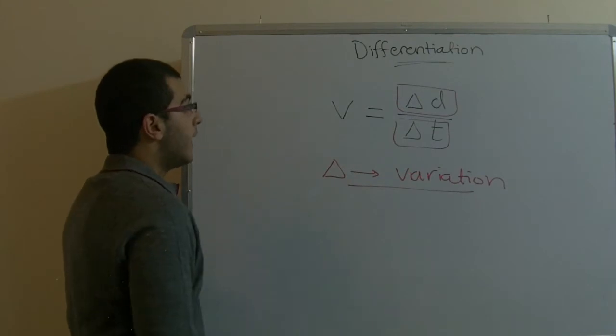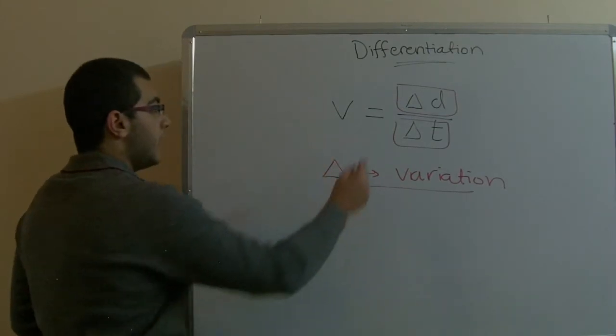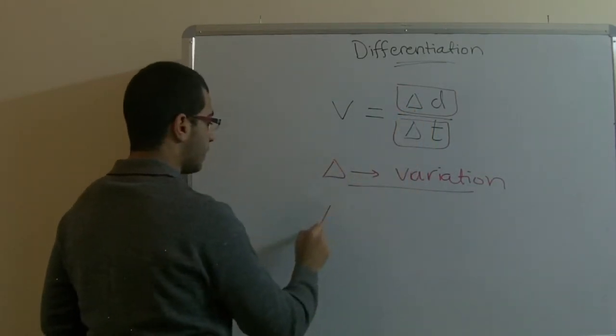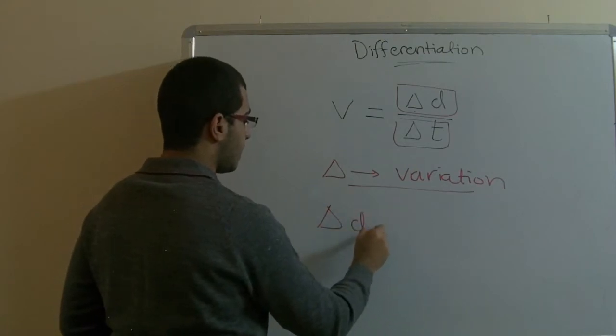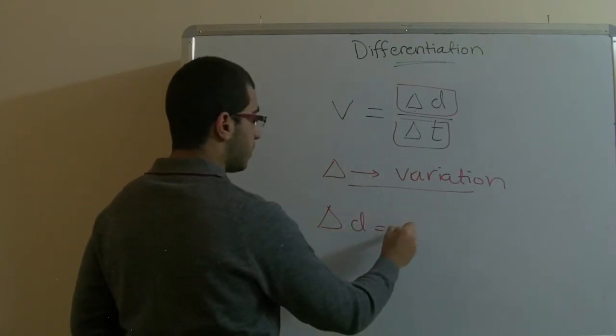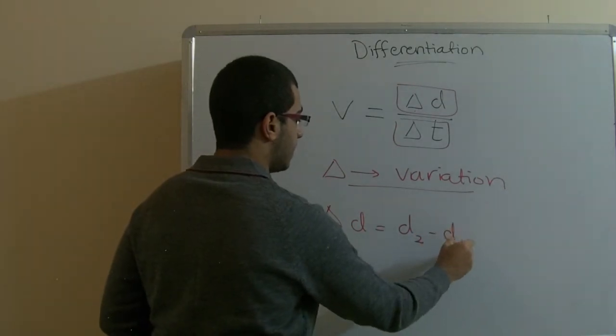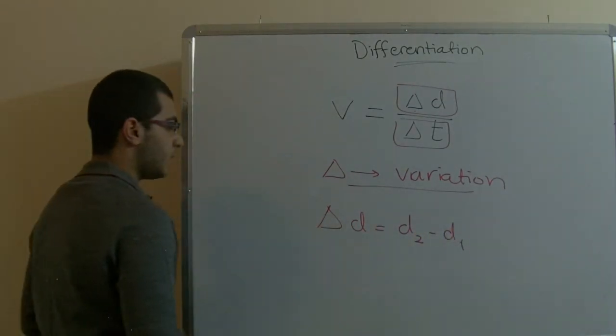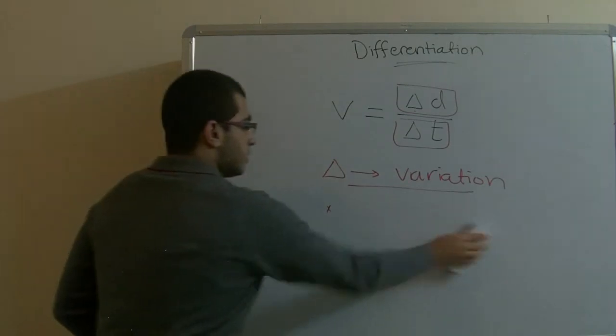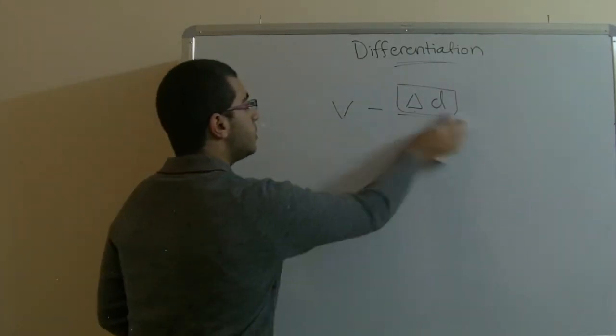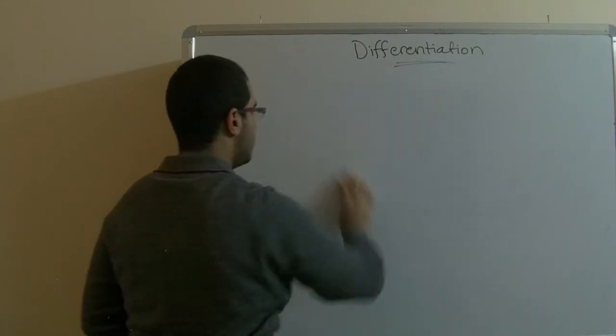So our lesson today talks about this point. If I want to get the value of this delta d, I say delta d equals d2 negative d1. Why did I say d2 minus d1?